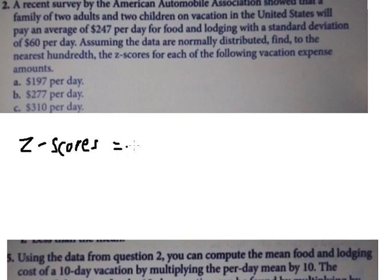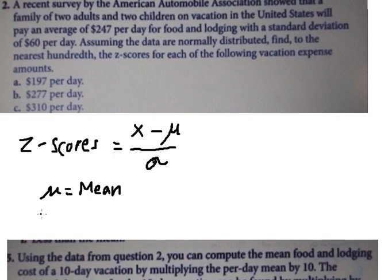We have X minus mu over sigma. Mu, that is the mean. And sigma, that is the standard deviation.